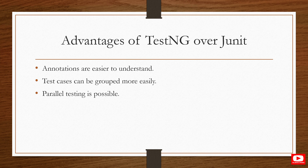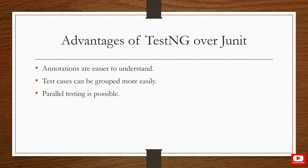Moving to the advantages of TestNG over JUnit: annotations are very easy to understand. JUnit provides @Before, @After, and @Test, whereas TestNG provides before class, after class, before method, after method, before group, and after group — which are additional features in TestNG. TestNG groups can also be organized very easily and conveniently.